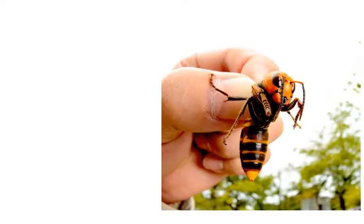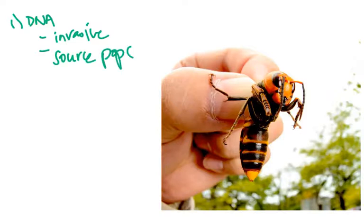So first of all, what we would want to do is get a DNA sample from both the invasive individuals and also the potential source populations. So in this case for the Asian giant hornet, like I mentioned earlier, they found some individuals in Washington and some individuals in Canada. So you would want to sample those guys. Those are the invasive ones here in the U.S.